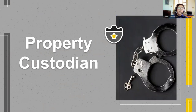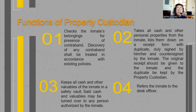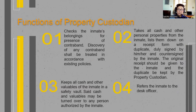Next is the Property Custodian. There are four functions of the property custodian. First, to check the inmate's belongings for the presence of contraband like cigarettes, alcohol, and drugs; discovery of any contraband shall be treated in accordance with existing policies. Second, takes all cash and other personal properties from the inmate, lists them down on a receipt form with duplicate, duly signed by him or her and countersigned by the inmate or now called persons deprived of liberty. The original receipt form should be given to the inmate, and a duplicate kept by the property custodian.